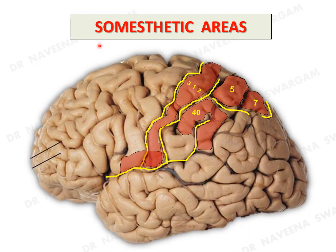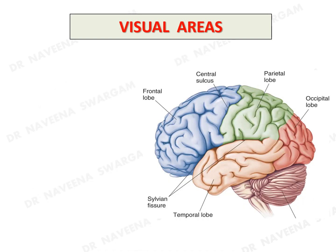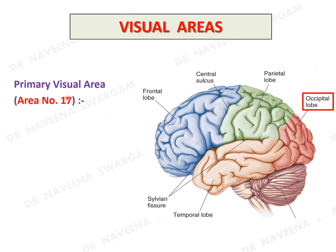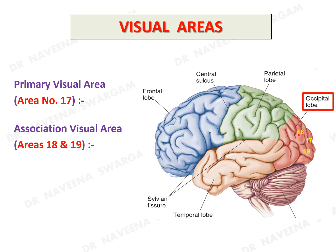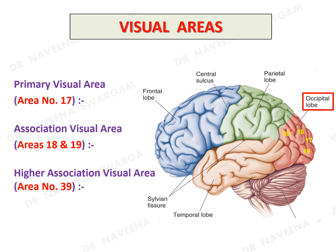That covers the somesthetic areas of the parietal lobe. Visual areas occupy the occipital lobe and are subdivided into primary visual area (area 17), association visual area (areas 18 and 19), and higher association visual area (area 39).